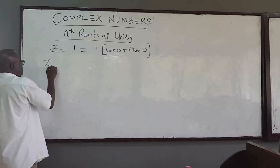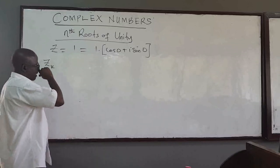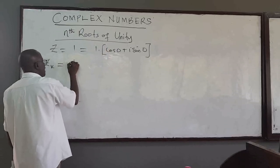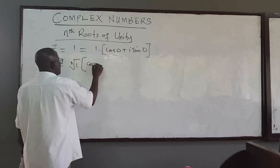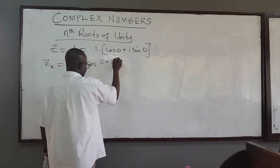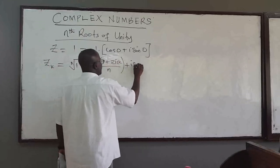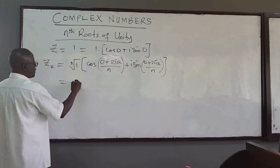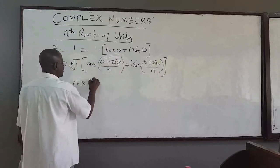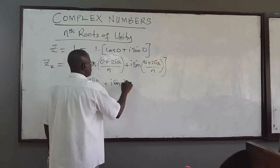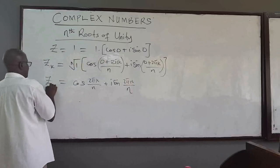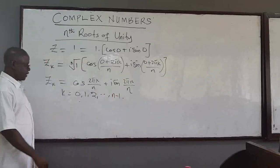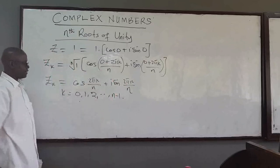So the general formula for finding the nth roots of any complex number — in this case unity, so the modulus is one — gives us: cosine of (zero plus 2πk) all over n, plus i sine of (zero plus 2πk) over n. This simplifies to zk = cos(2πk/n) + i·sin(2πk/n), where k goes from 0, 1, 2, all the way to n minus one.